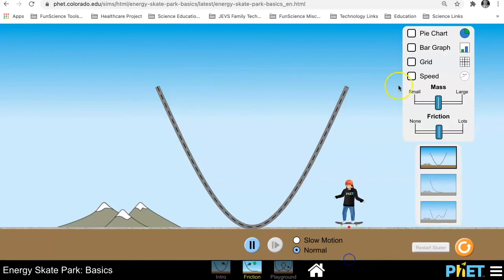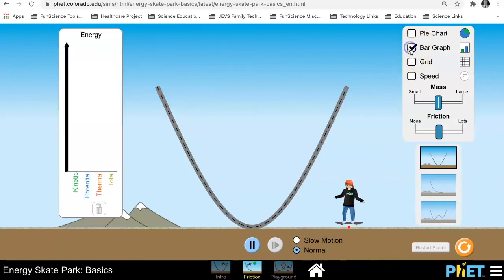Actually, let's start with the bar graph again here. And let's put her on the track and drop her down. This time, however, you'll notice that the thermal energy is climbing higher and higher. And you'll notice that she slows down. So we can talk about that and analyze that.